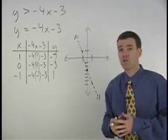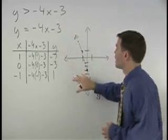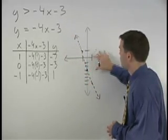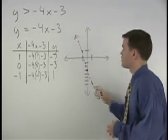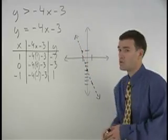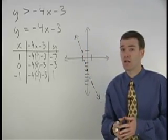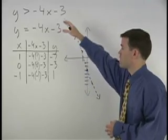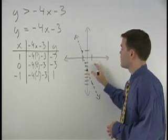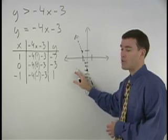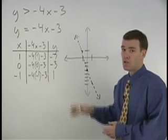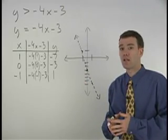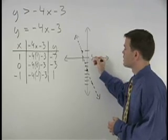The solutions to this inequality will all lie on either one side or the other of this boundary line. So to determine where the solutions lie, we choose a test point to plug back into the original inequality from either side of the boundary line. Usually, the easiest point to try is the origin, 0, 0.